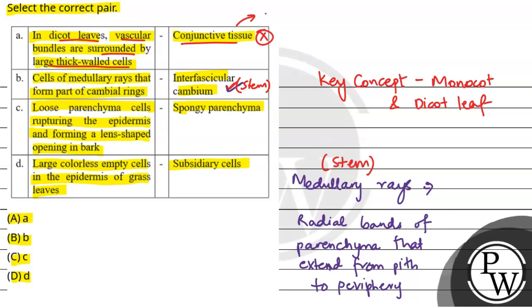Third is loose parenchyma cells rupturing the epidermis and forming lens-shaped opening in the bark. That is not called spongy parenchyma. They are called the complementary cells. And large colourless empty cells in the epidermis of the grass is buliform cells.